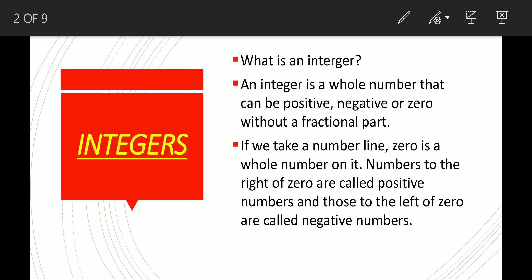Now, let me tell you what is an integer. An integer is a whole number that can be positive, negative, or zero, without a fractional part. For example, 5, 9, 12, 200, minus 300, minus 5, etc.